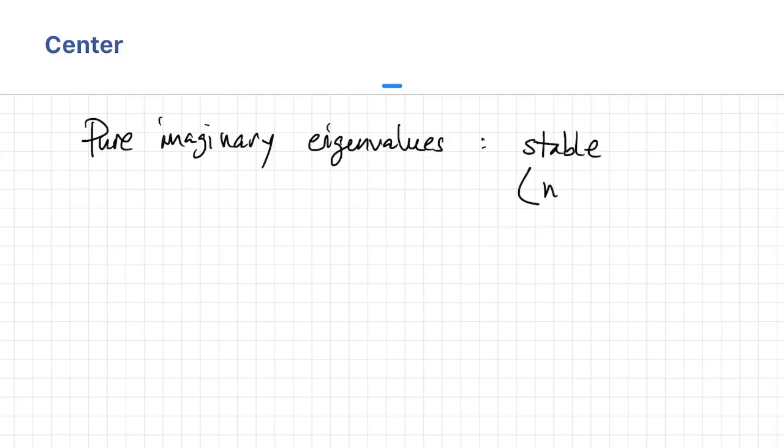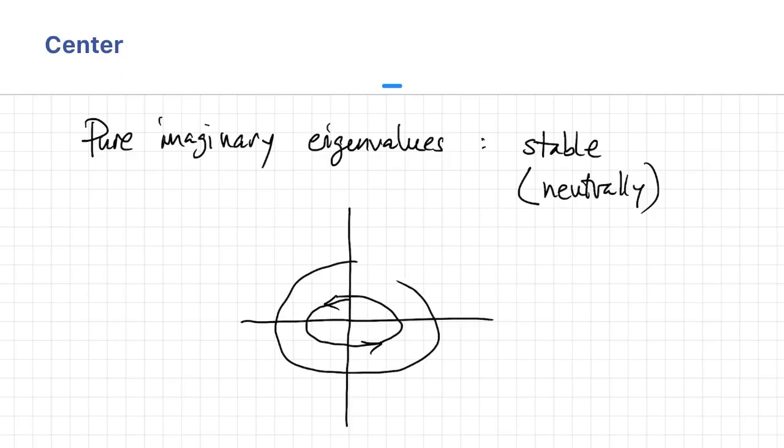Imagine you push the ball away on a flat table. It doesn't return to the equilibrium, it doesn't get any farther, it just stays where it is. So this is an analogous situation, and in fact, instead of spirals, you get closed trajectories.